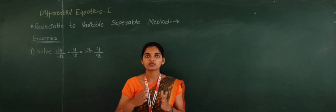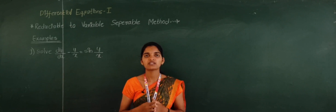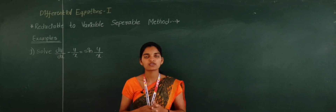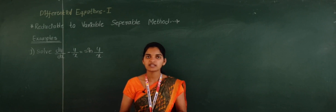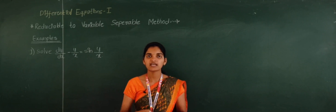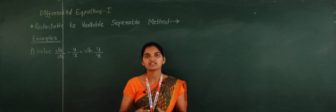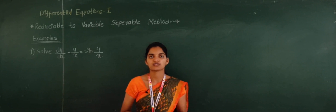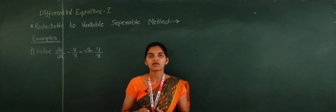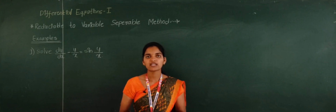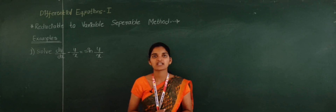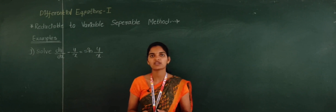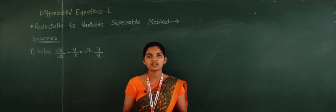After that, the equation will be reduced to variable separable form. Then we can integrate and get the solution. By taking one example, I will explain this reducible to variable separable method.